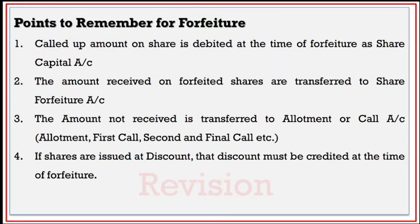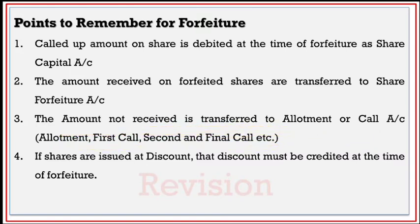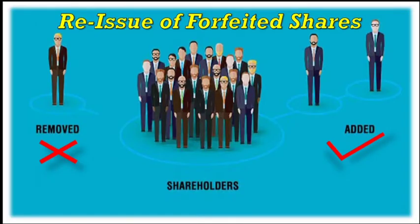We have five different forms of forfeiture: forfeiture of fully paid-up shares, forfeiture of partly paid-up shares, forfeiture of shares originally issued at discount, and forfeiture of shares originally issued at premium — where premium is in arrears along with share allotment, and where allotment money is received along with premium. We also noted that the called-up amount on a share is debited at the time of forfeiture. The amount received on forfeited shares is transferred to the share forfeiture account. The amount not received — that is, in arrears — is transferred to the allotment, first call, or second and final call account. If shares are issued at discount, that discount must be credited at the time of forfeiture.